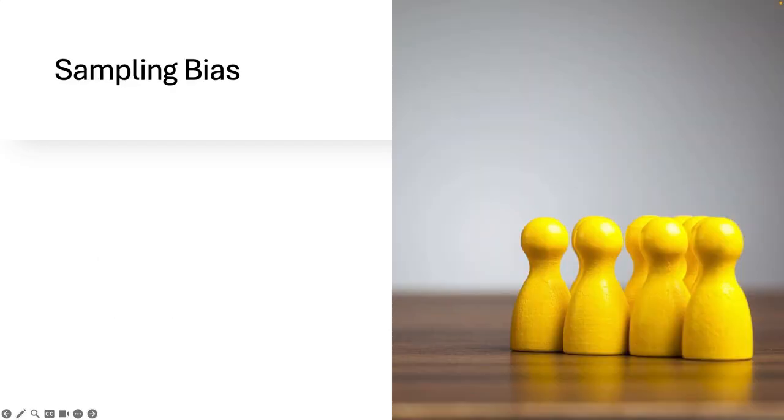All right, so now we know the how of sampling. Let's talk about how we can go wrong. And that's where sampling bias comes in. Bias happens when your sample doesn't actually reflect the population. And that means your results might lead you to totally wrong conclusions, which definitely is not ideal. Let's go through a few option types.